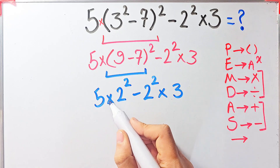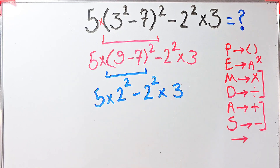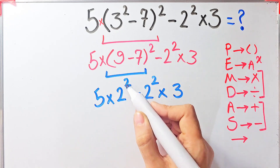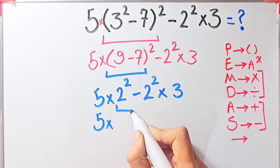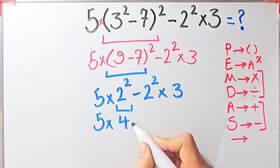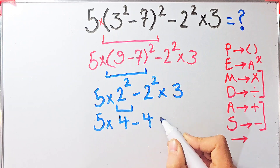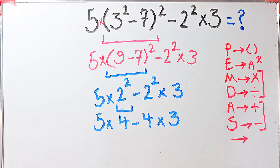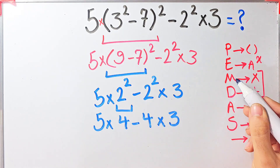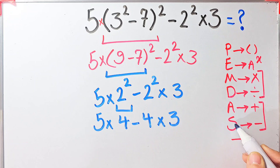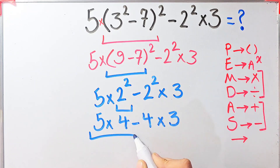Now we have multiplication, exponent, and subtraction. First we simplify the exponent. Five times two to the power of two, which equals four, then minus four, then times three. Now we have multiplication and subtraction. We simplify the multiplication first because multiplication has higher priority than subtraction. Five times four equals 20.